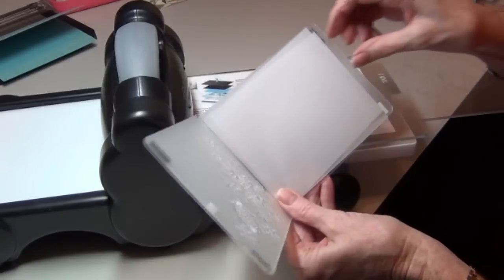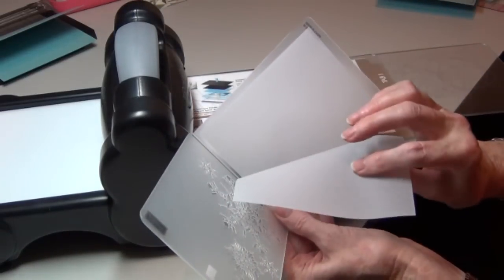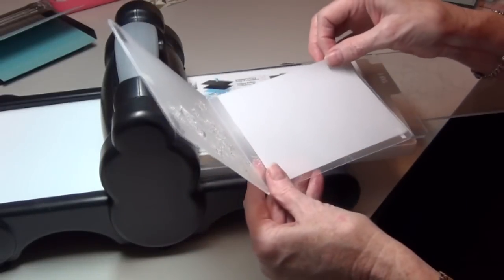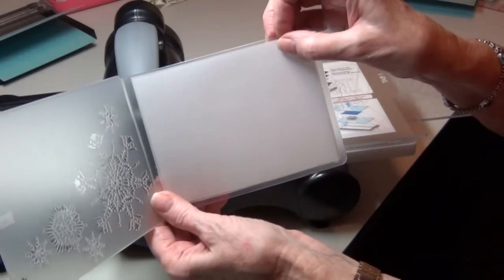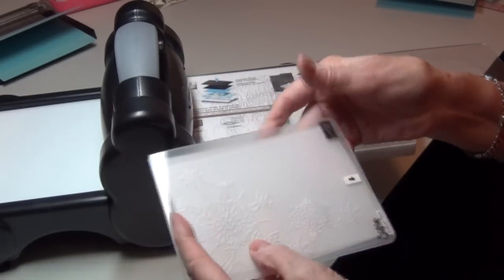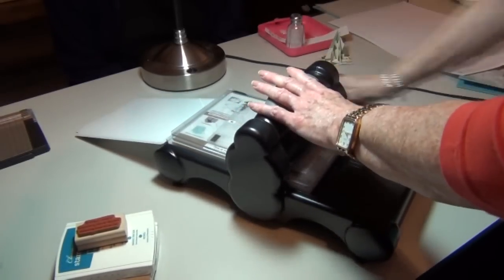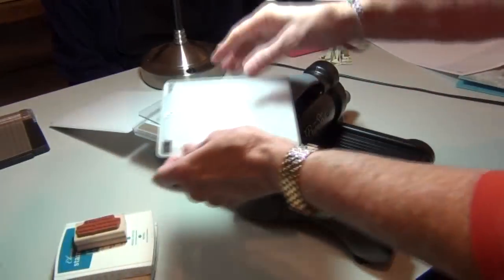First thing, the vellum. We're working with the vellum paper, not the cardstock. It's lighter weight. You can do two sheets at once. So you want to put that in there and put it through your Big Shot. Let's crank it through.